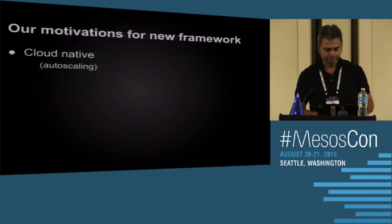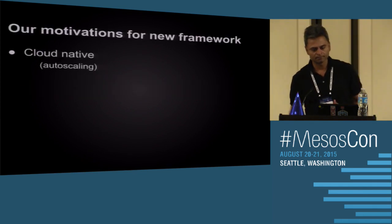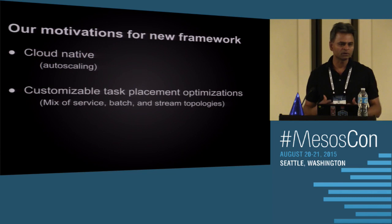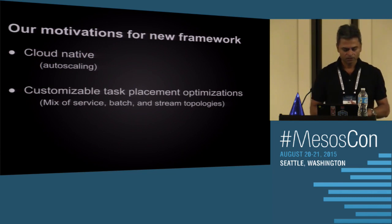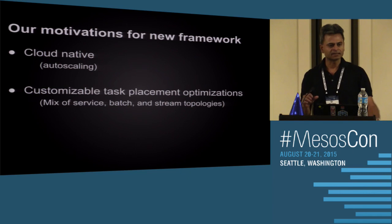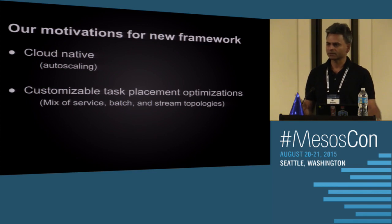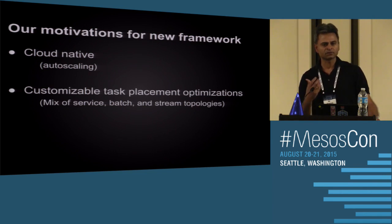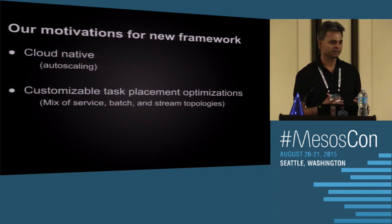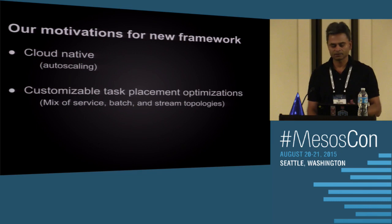Our motivations for building our own: first, cloud-native — auto-scaling while doing scheduling optimizations. We're going to have a mix of service, batch, and stream processing topologies, each with multiple constraints on task placement: data locality, and in stream processing what we call stream locality, where two jobs reading from the same source can be co-located to optimize network bandwidth. Achieving all this while doing auto-scaling is what led us to write our own framework.